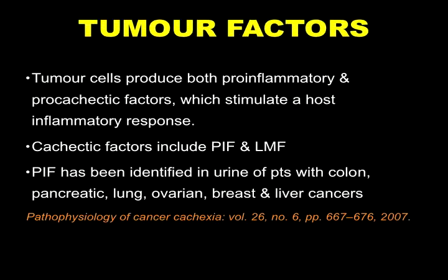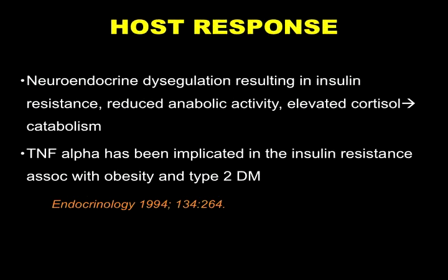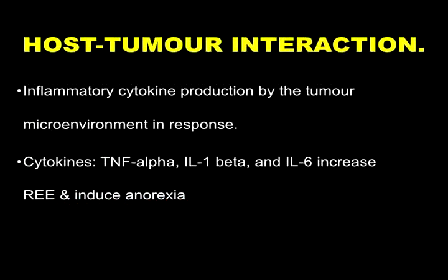In response to the presence of tumor cells, the body begins producing inflammatory factors like TNF-alpha, which eventually lead to alterations in metabolism — TNF-alpha can cause insulin resistance. The microenvironment around these tumor cells leads to a body response characterized by production of cytokines: TNF-alpha, interleukin-1, and interleukin-6, which end up increasing resting energy expenditure and eventually inducing anorexia and cachexia.